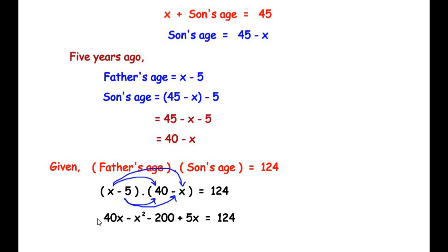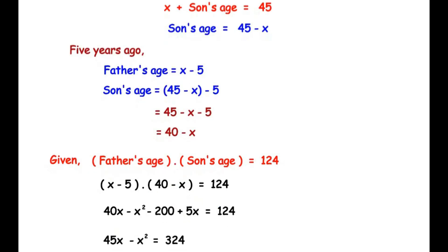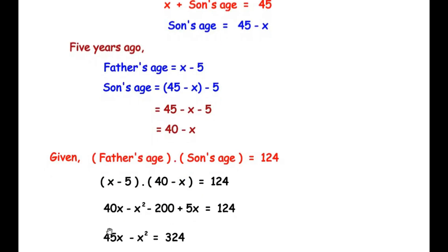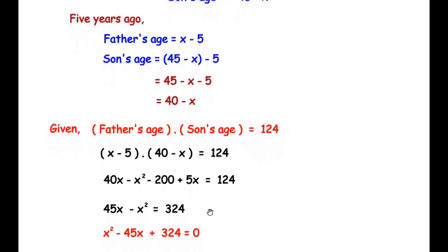Next, combining like terms: 40x and 5x are like terms giving 45x. Taking minus 200 to the other side of the equal sign, it becomes positive 200, and 200 plus 124 gives 324. So we have negative x squared plus 45x equals 324. To make x squared positive, we take all terms to the right-hand side, giving x squared minus 45x plus 324 equals 0.